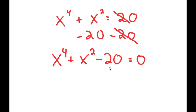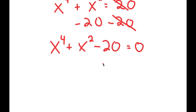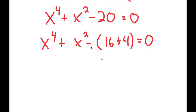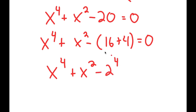We can't factor this out by using the quadratic formula because this is not a quadratic equation. So what I want to do is rewrite this as x to the power of 4 plus x squared minus 16 plus 4. I rewrote 20 as 16 plus 4, because negative 16 is the same thing as negative 2 to the power of 4, and negative 4 is the same thing as negative 2 squared.